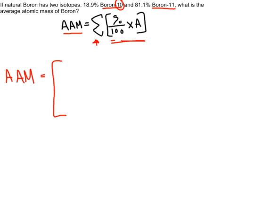The 10 means the mass number which goes into the equation here. So the percent is 18.9%, so we'll put that where the percent goes into the equation, divide it by 100, and we'll times it by the mass number for boron-10, which is just 10.